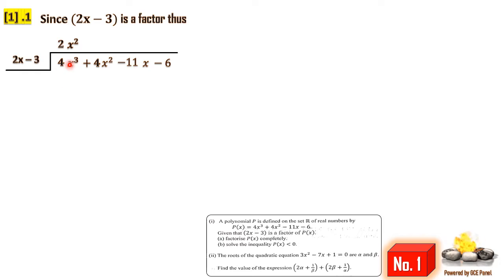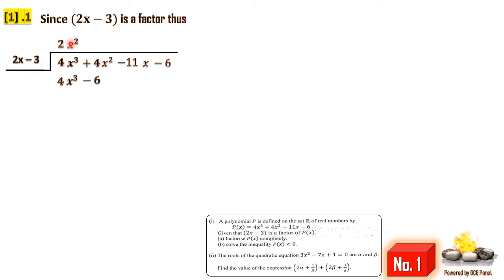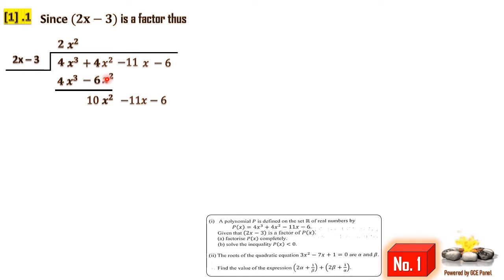The first term is 4x cubed. So 4x cubed divided by 2x: 4 divided by 2 is 2, and x cubed divided by x is x squared, giving 2x squared. Then 2x squared times 2x gives 4x cubed, and 2x squared times negative 3 gives negative 6x squared. Subtracting: 4x cubed minus 4x cubed is 0, and 4x squared minus negative 6x squared gives 10x squared.